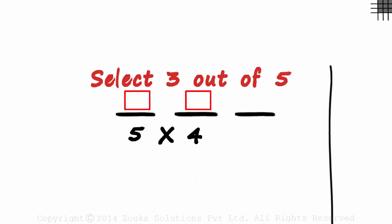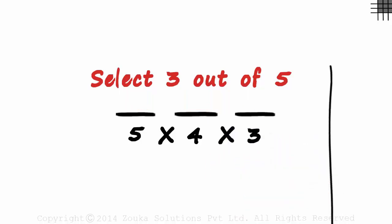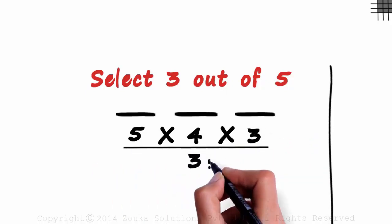And as two are already picked, three remain from which we can pick the third one. Three ways. But as we have been asked to select, the order does not matter here. And as the order does not matter, we divide this by 3 factorial.